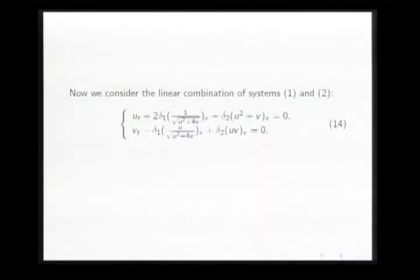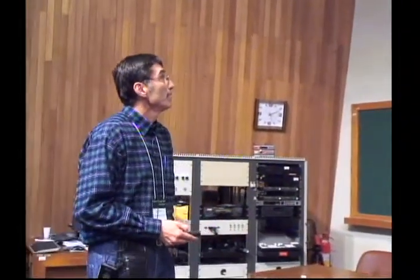Now, consider the linear combination. This is the main of our work. You consider this combination of the two initial systems, and of course, the natural question here is, what happened, for example, when you fix Delta 1 and Delta 2 goes to zero? What happened with this situation? In this case, is it possible to obtain the solution for the first system? The answer is yes, and this is the main result of our work.